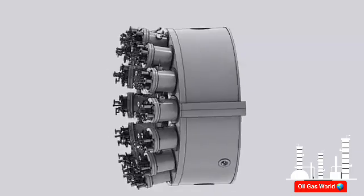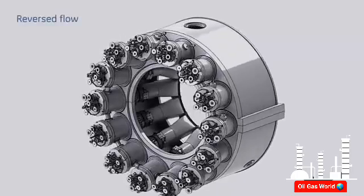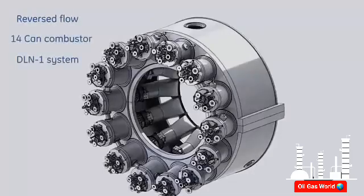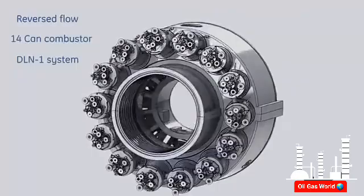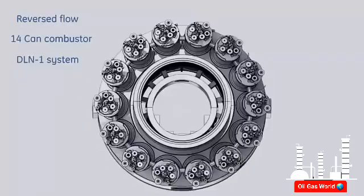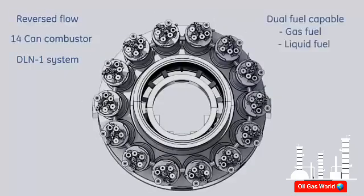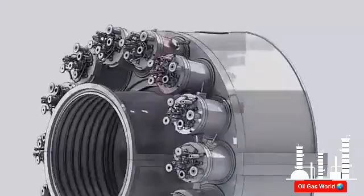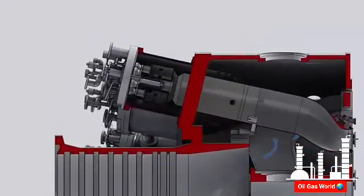The combustion system of this gas turbine is a reverse flow type with 14 DLN1 can-annular combustion chambers arranged around the periphery of the compressor discharge casing. Combustion chambers are numbered counterclockwise as viewed looking downstream, starting from the vertical center line. With dual fuel capability, this turbine burns either gas fuel or liquid fuel. In this section, the pressurized compressor discharge air is directed upstream to enter the combustion zone.